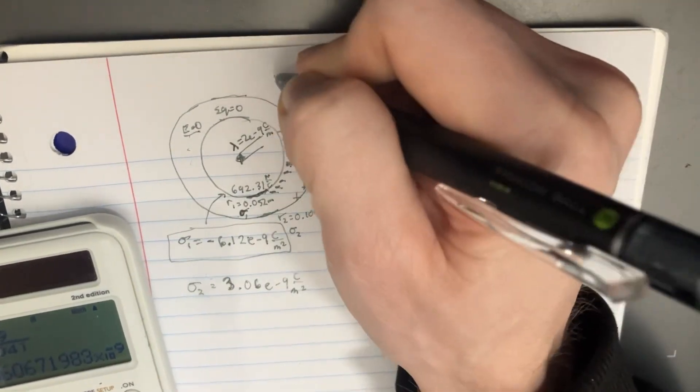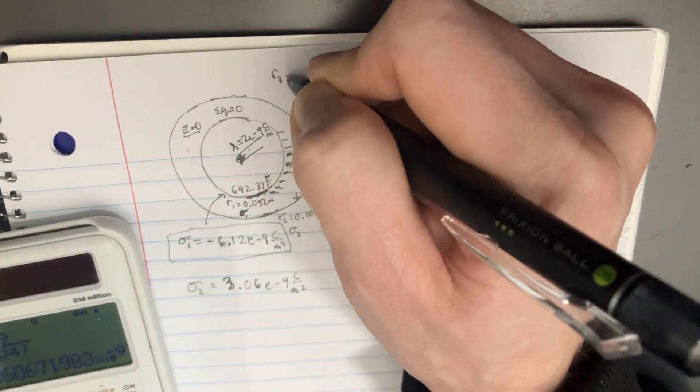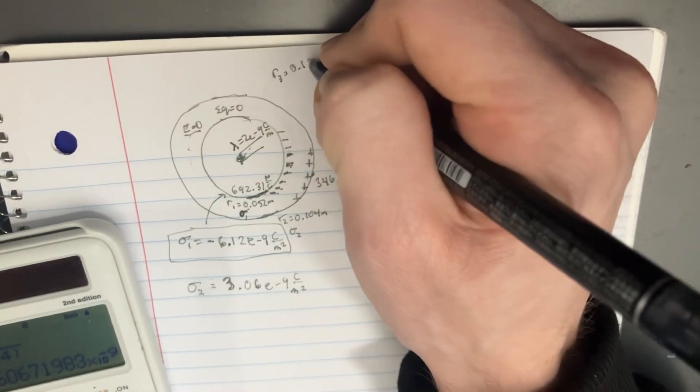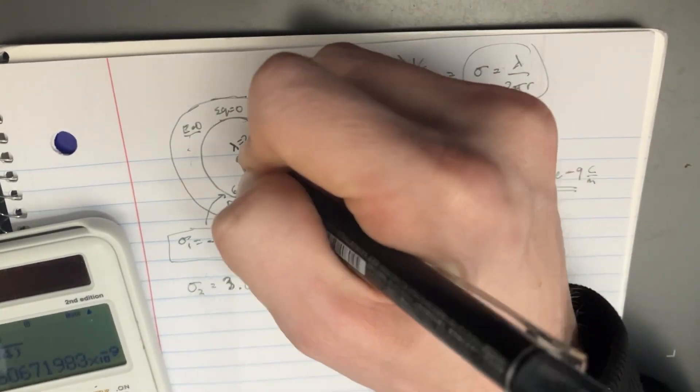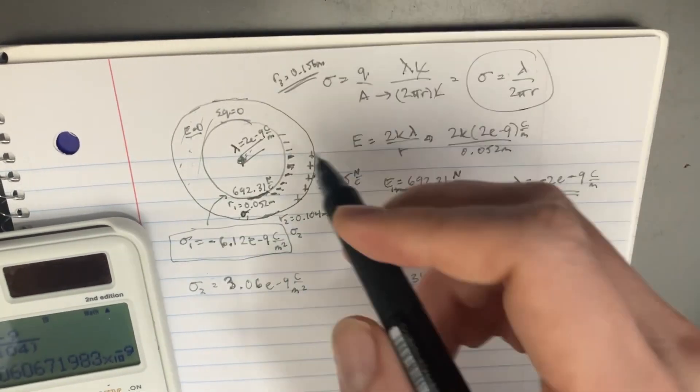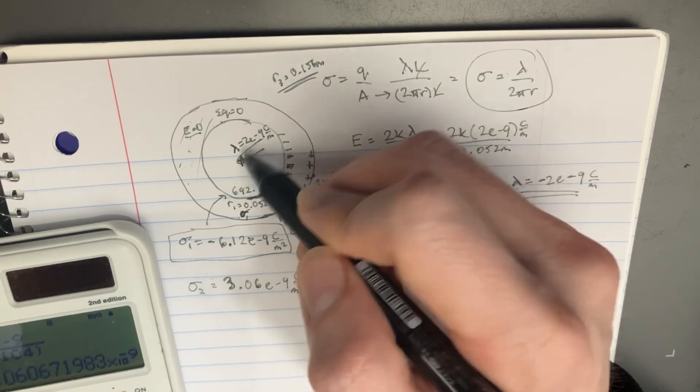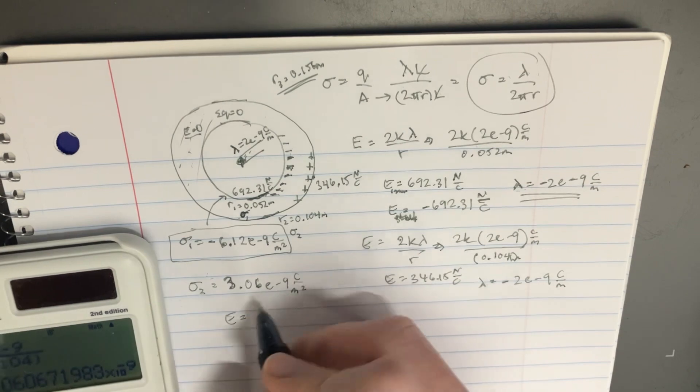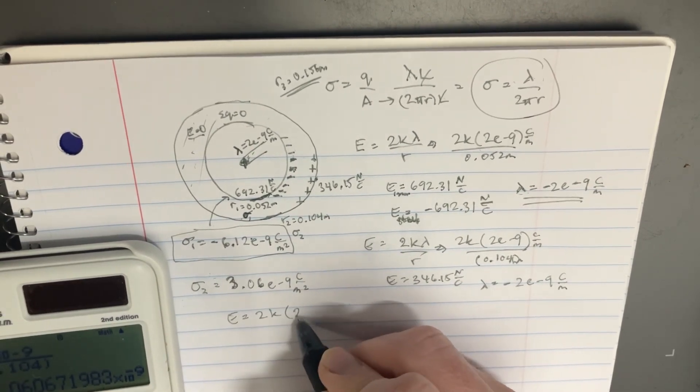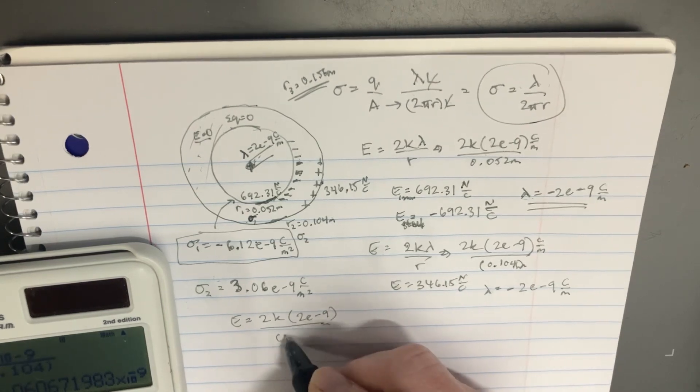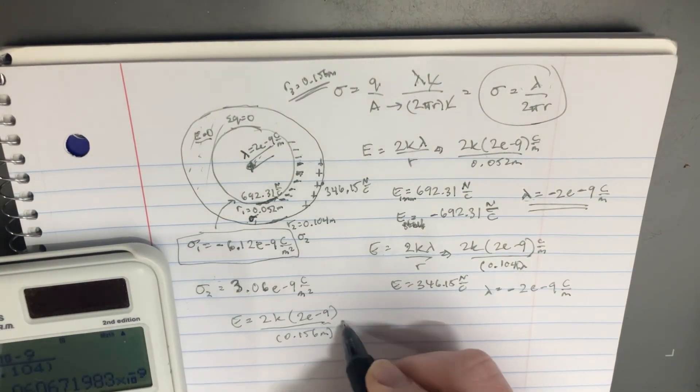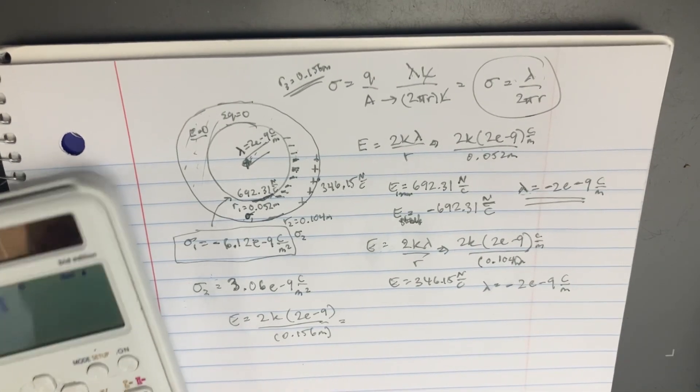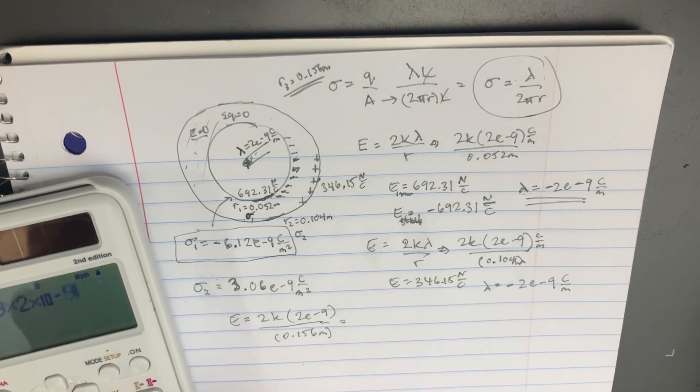And if we're going all the way out here to the third radius, the radius is 0.156 meters. This is the third radius from out here. Well keeping in mind this is just going to cancel out to zero, so we're just going to use the same lambda from before. And if we just do the calculation, we get 2k and we get 2 e to the negative 9 divided by 0.156 meters.